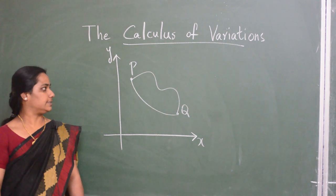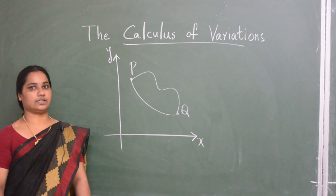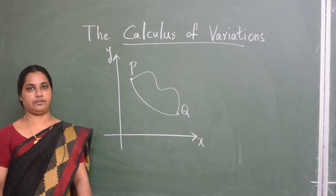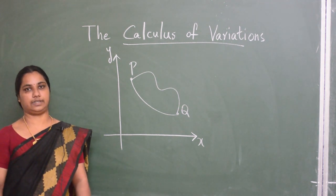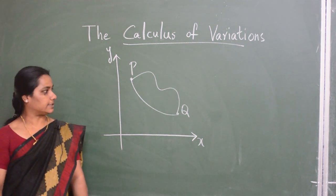The next problem is to find the curve that generates the surface having the smallest area of revolution while revolving about the x-axis. And the third problem is the brachistochrone problem.